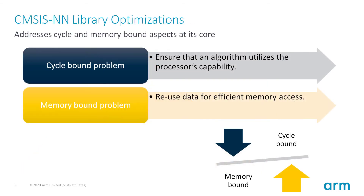Coming to CMSIS NN and library optimizations, let's look at what goes behind the scenes. At its core, optimizations can be grouped as addressing the cycle-bound problem or the memory-bound problem.